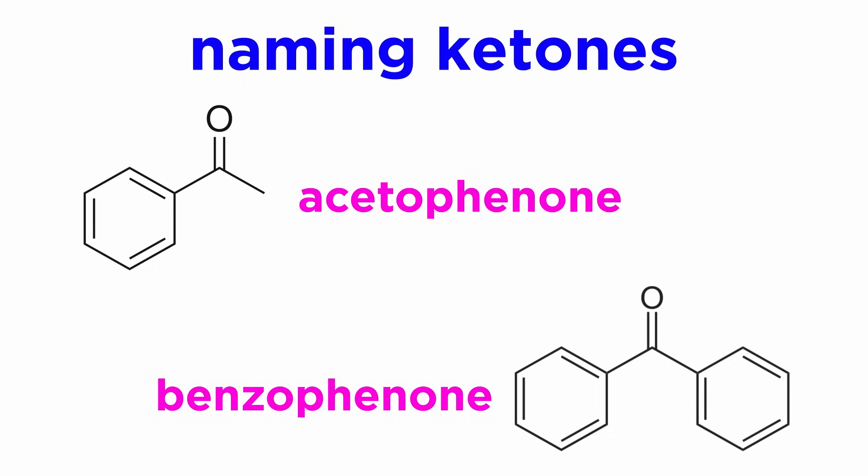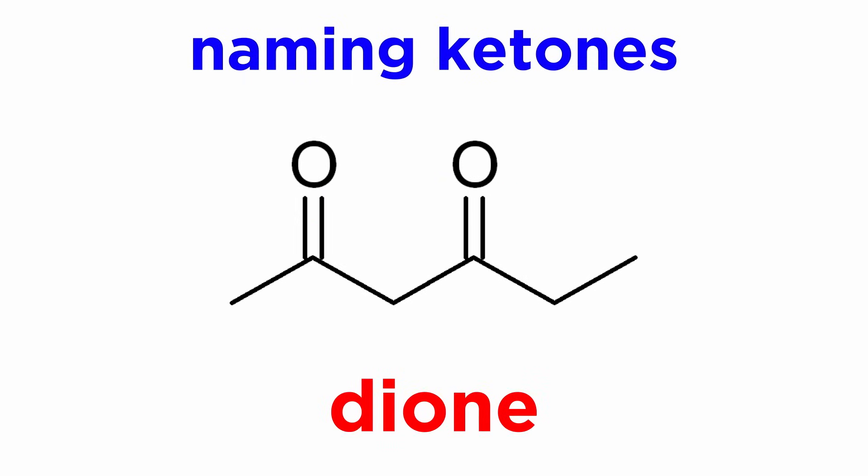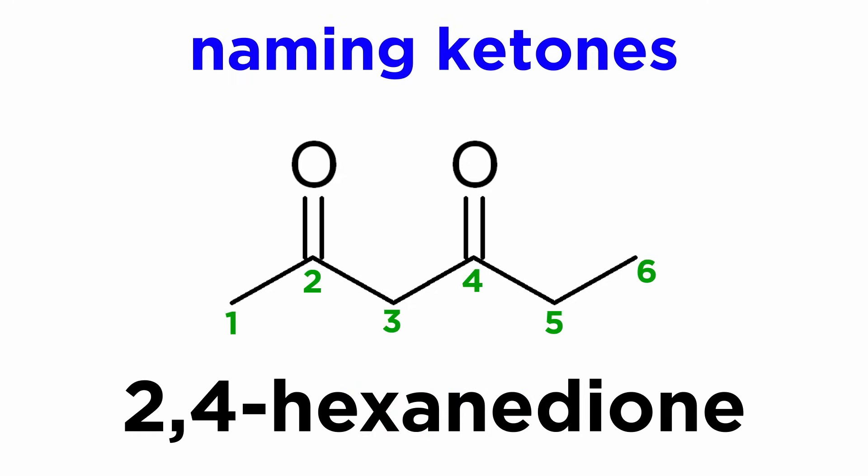Other common examples include acetophenone and benzophenone. If there are two ketone functional groups, it's a dione, and we must list where they occur on the parent chain, such as with 2,4-hexanedione. Note that in this case we spell out hexane in its entirety.